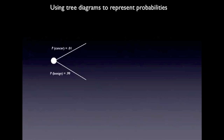In this instance, this is how the tree diagram would begin. We use a little circle at the left-hand side to represent a region of uncertainty. Tree diagrams are sometimes used in decision-making procedures, where they include squares representing a decision with different options. But here, we're simply using circles representing uncertainty. We've got two branches of the tree: one representing the probability that cancer is present (0.01), and another representing the probability that cancer is not present — that the lump is benign (0.99).